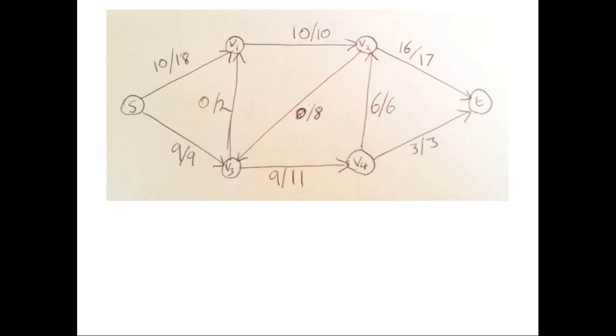So here I've drawn another flow network, and this time I've actually filled out the flows. So in this case, from S to V1, you can see that we have a flow of 10 and the capacity is 18, and from V1 to V2, we have a flow of 10 and the capacity is 10.